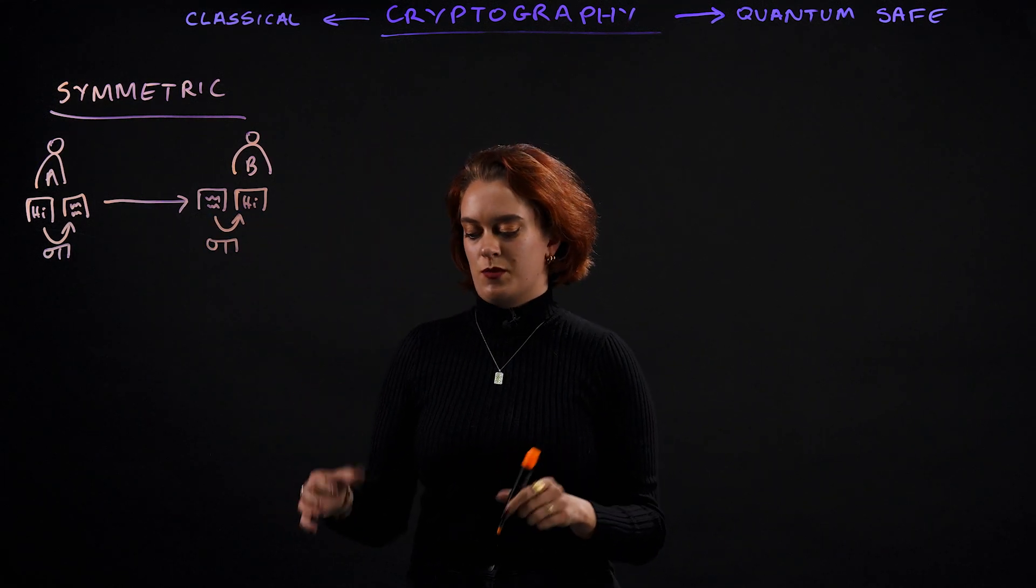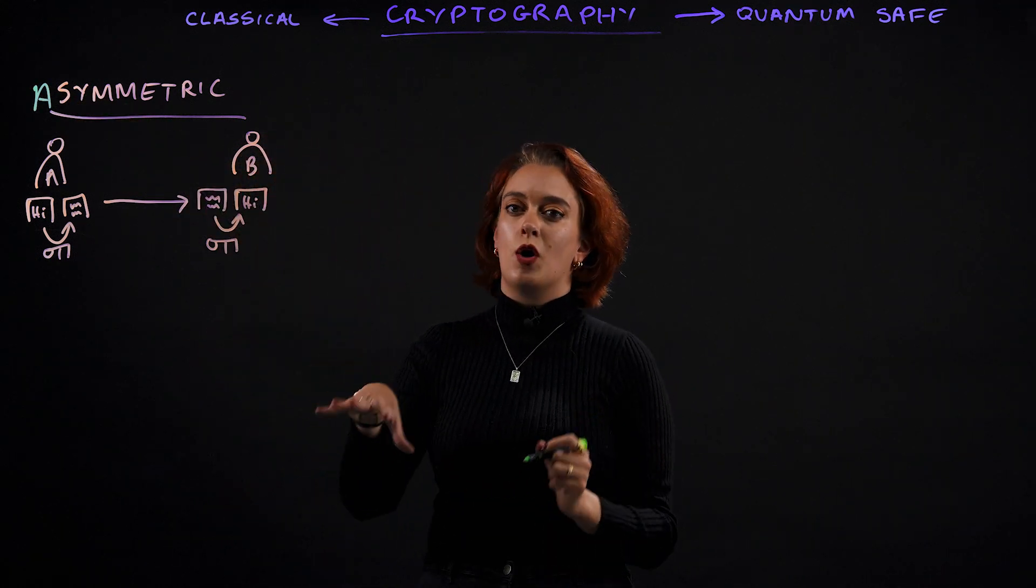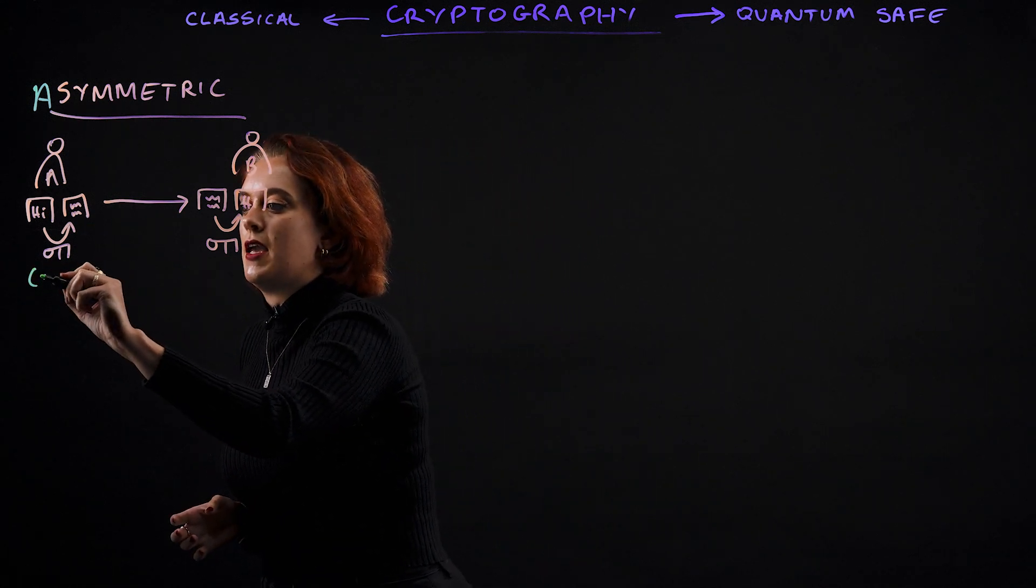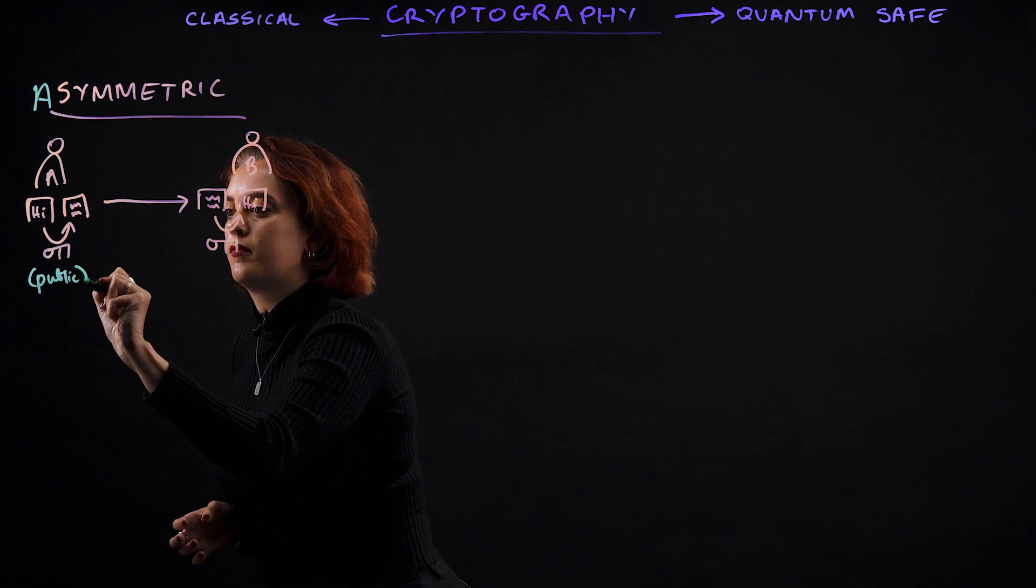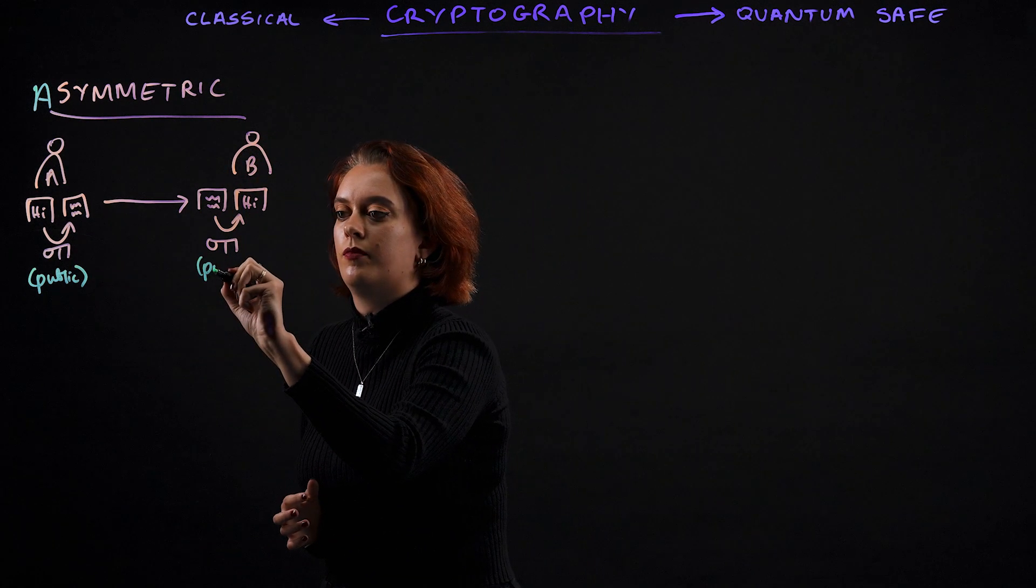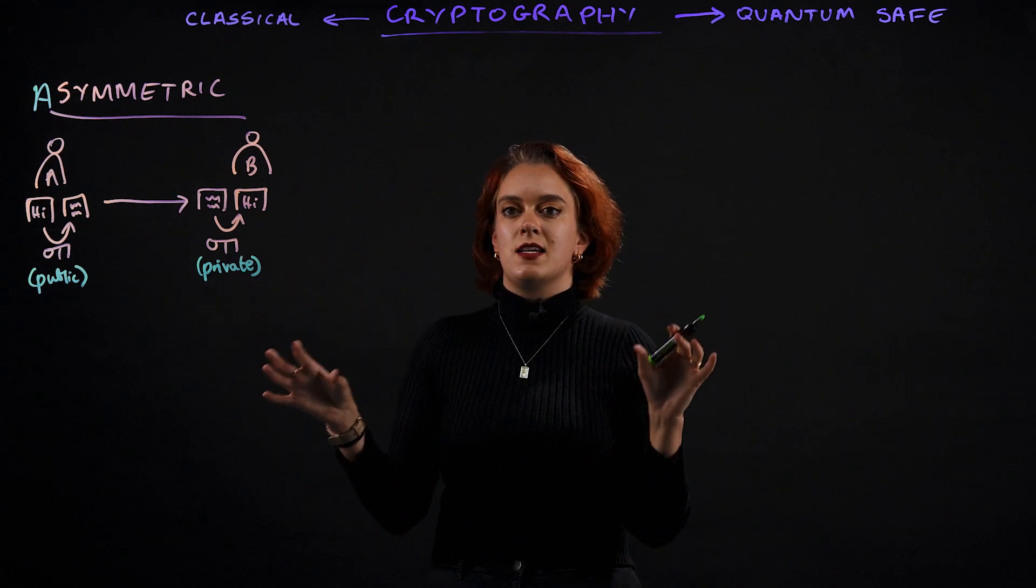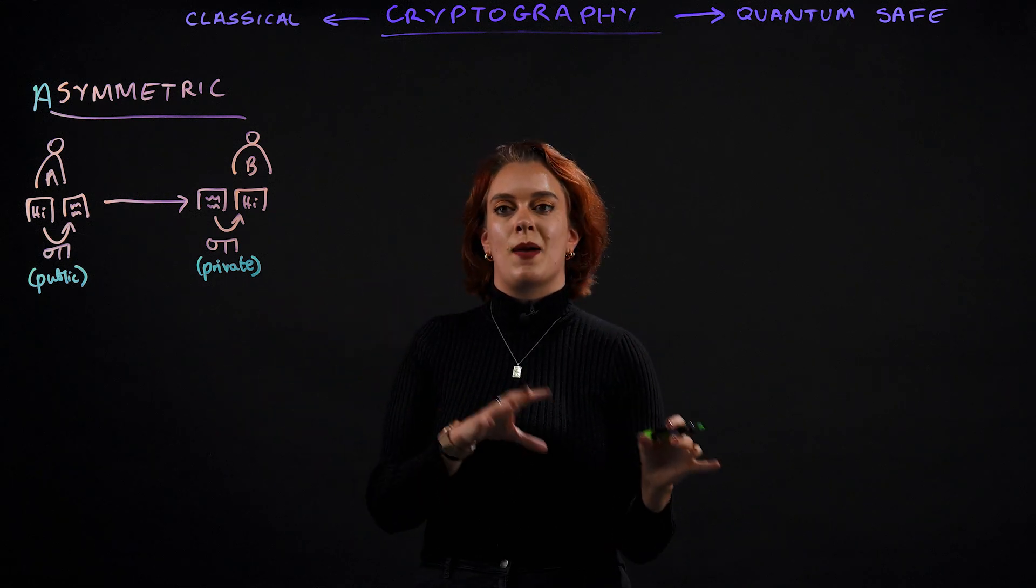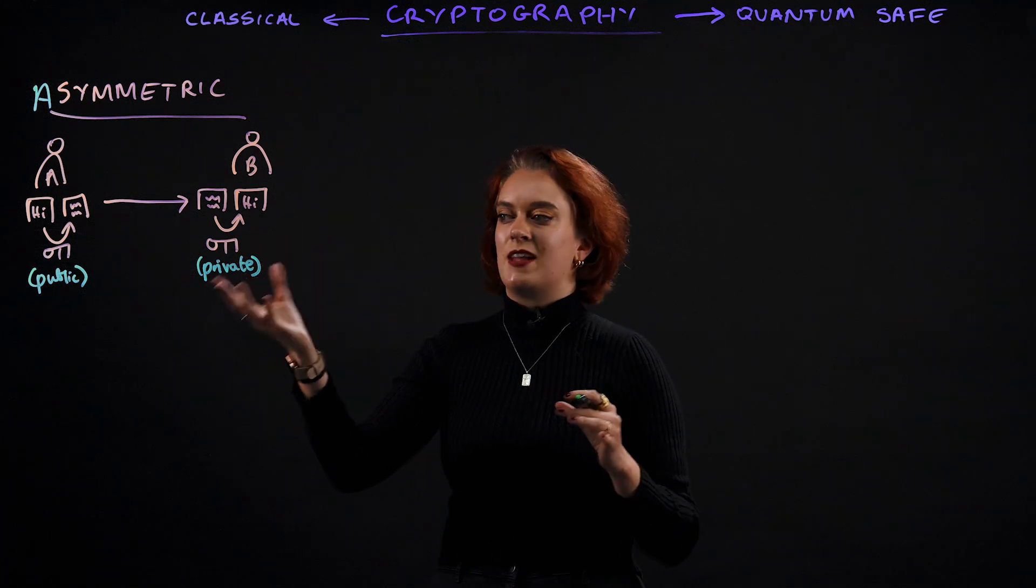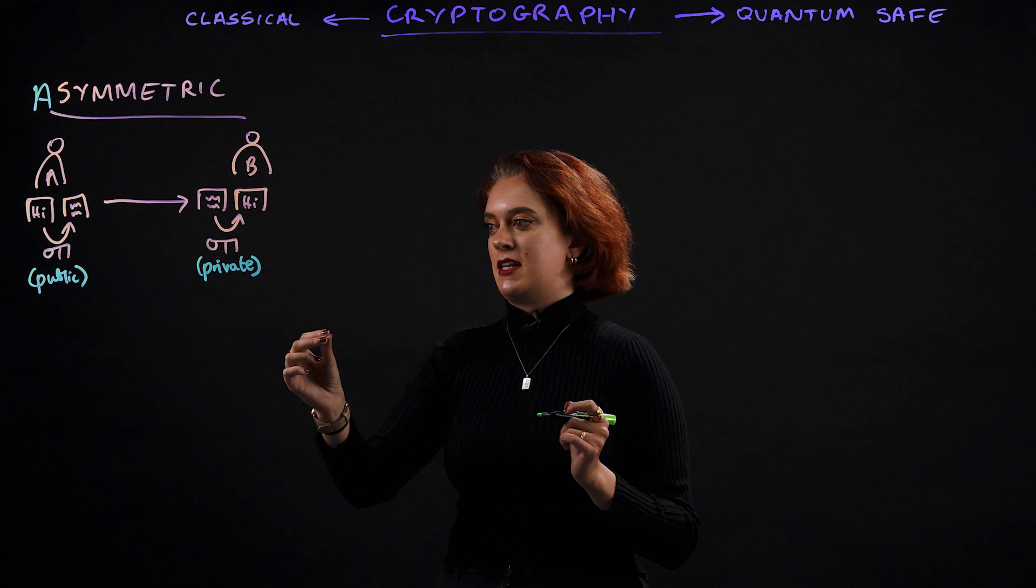Asymmetric encryption works in a very similar way. But instead of Alice and Bob using the same secret key, Alice will have a public key and Bob will have a private key. So these keys are different. One is mathematically derived from the other. And in a nutshell, anyone could possibly access that public key, but only the private key can be used to decrypt the message.